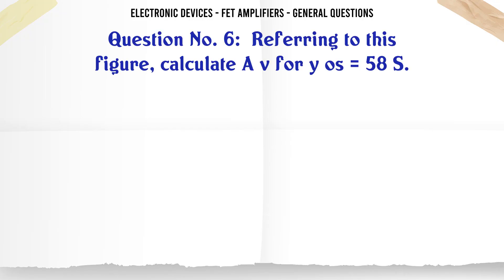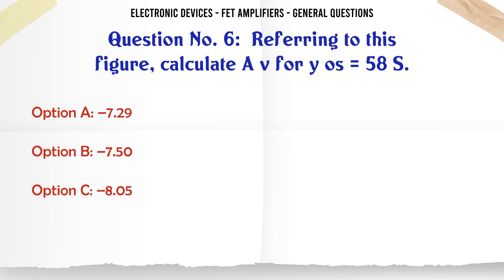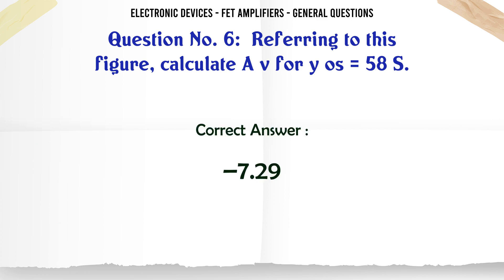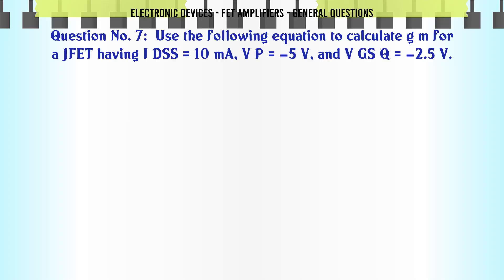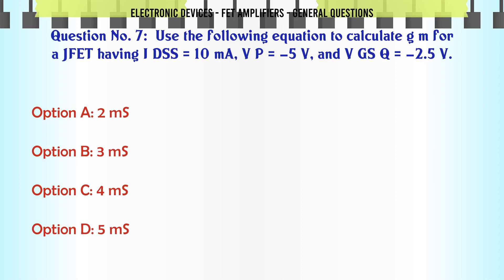Referring to this figure, calculate A_V for RD = 19K, YOS = 58µS. A. 7.29. B. 7.50. C. 8.05. D. 8.55. The correct answer is 7.29.